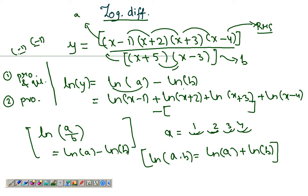Now negative log of b - log of b is again a product of two things which can be written as the sum of their individual logs. So this is minus log of (x plus 5) plus log of (x minus 3). And now if you differentiate this whole thing you can easily apply d/dx of ln x equals 1 over x and you get the answer.